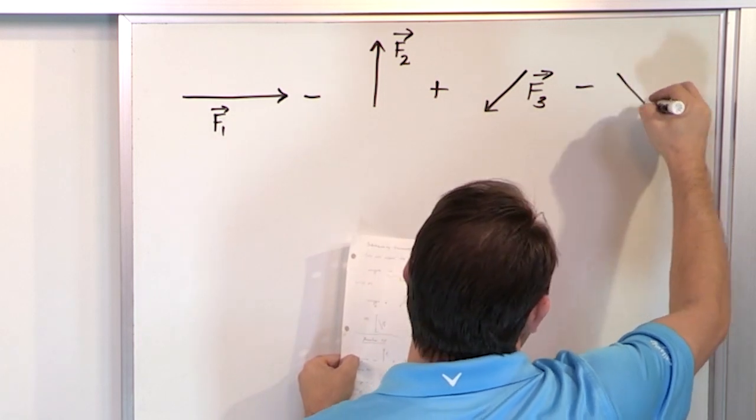And then from that, we're going to subtract another vector. And this one's going to be going down to the right. We're going to call this vector F4. So obviously, we're doing some addition in here, right? Like this. But we're also doing some subtraction. So it's this minus this plus this minus this. Okay. So how do we handle it?